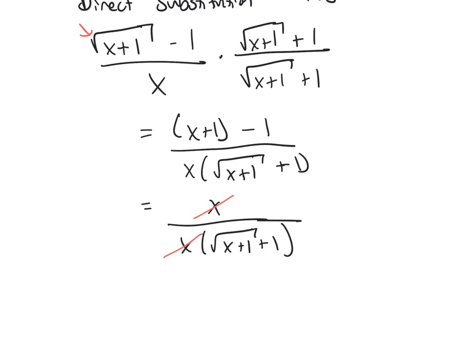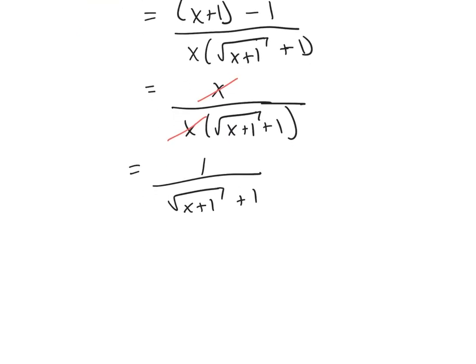We can cancel that and get 1 over the square root of x plus 1 plus 1. And now I can compute the limit of this simplified version. I'll be able to use direct substitution here. So 1 over 1 plus 1, or 1 half, will be the limit.